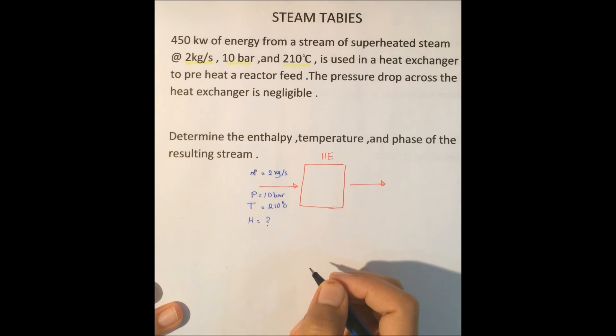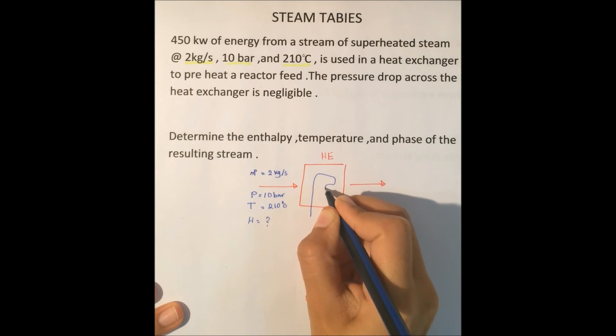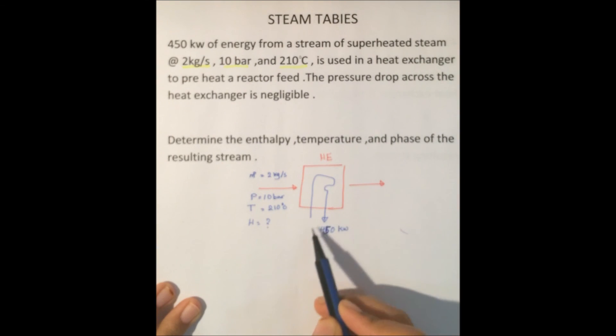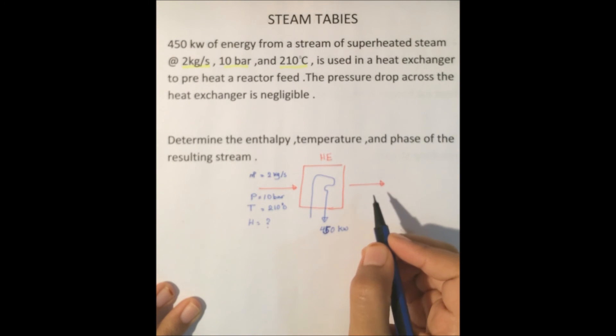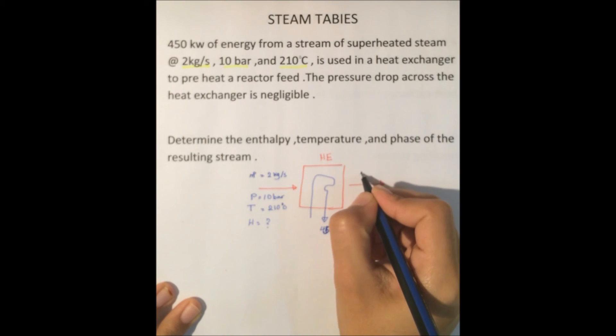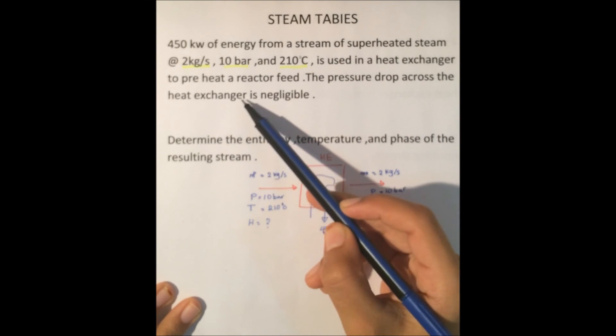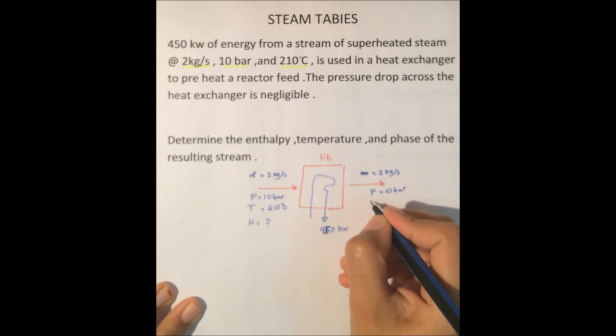In the heat exchanger, a reactor feed comes in and extracts 450 kilowatts or 450 kilojoules per second of energy. Because of this extraction, we have a change in the steam stream. The mass flow rate will still equal 2 kilograms per second, the pressure will still equal 10 bar because the pressure drop across the heat exchanger is negligible, and of course we don't know the temperature at the outlet.